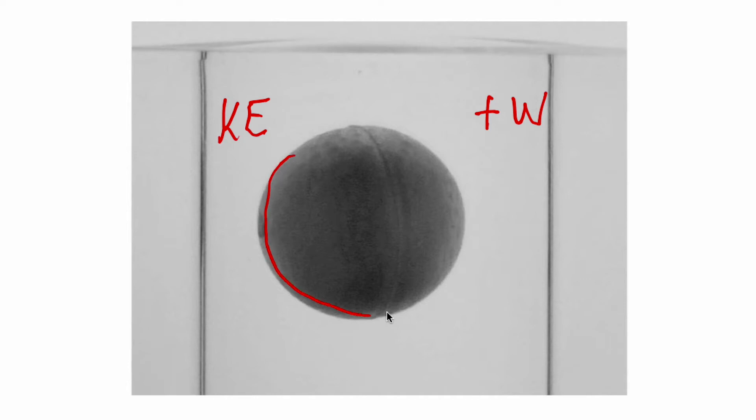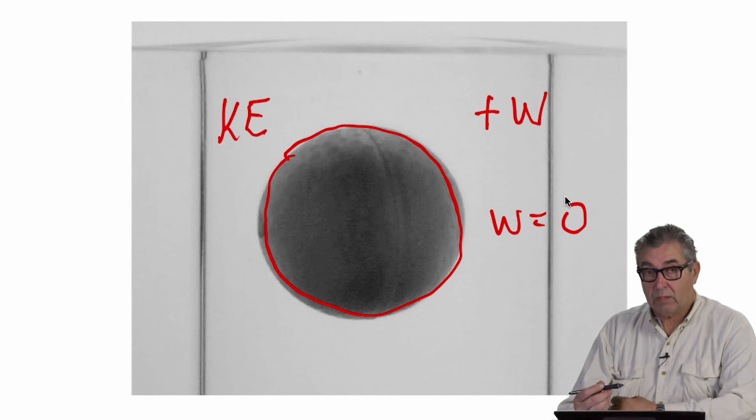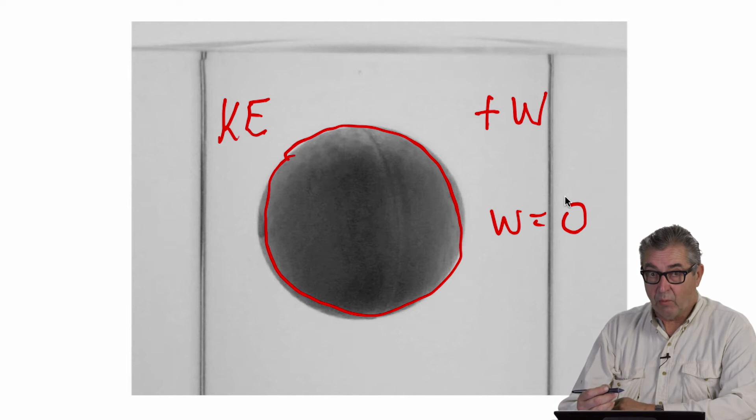When the ball is completely submerged, there is no meniscus and no net force, meaning that the work then at that point is zero but the ball has momentum and kinetic energy and it is moving downward.